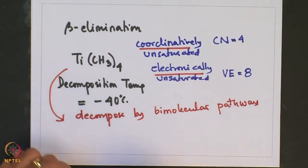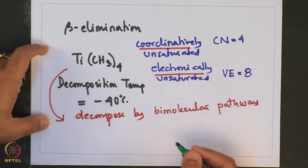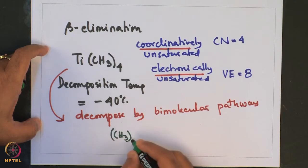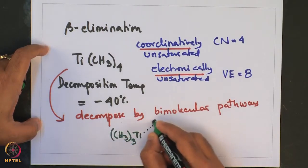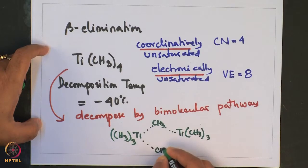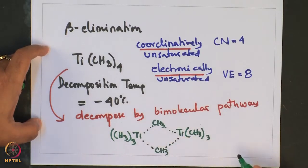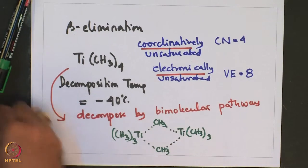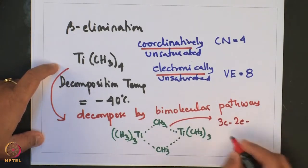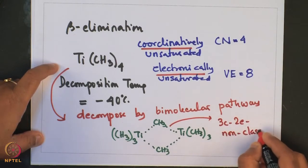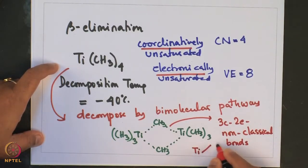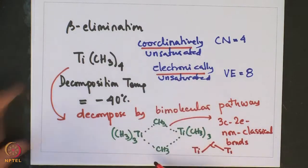This bimolecular pathway involves the interaction of titanium with the titanium-methyl bond of a neighboring molecule. This weakens the titanium-methyl bond, as these are 3-centered, 2-electron, non-classical bonds. This results in the decomposition of the titanium tetramethyl moiety.